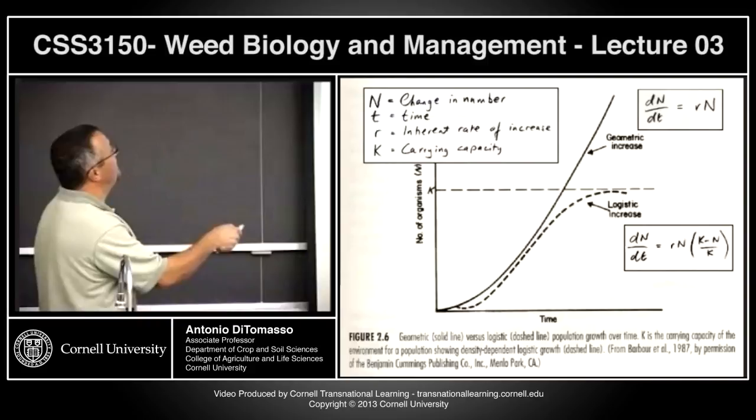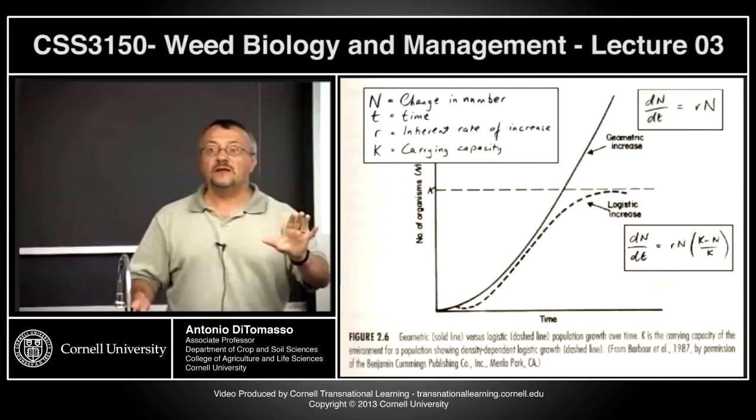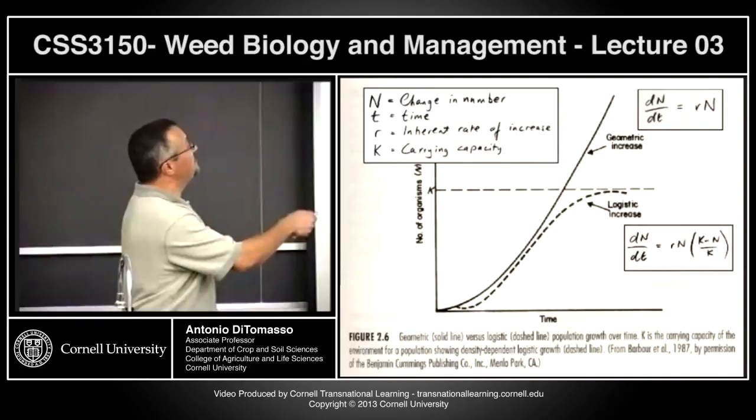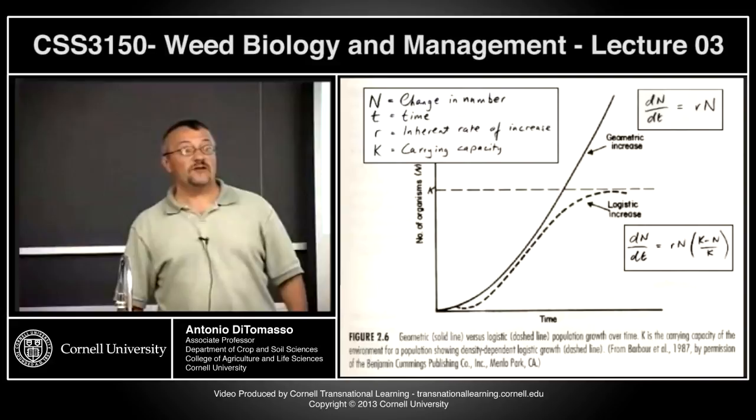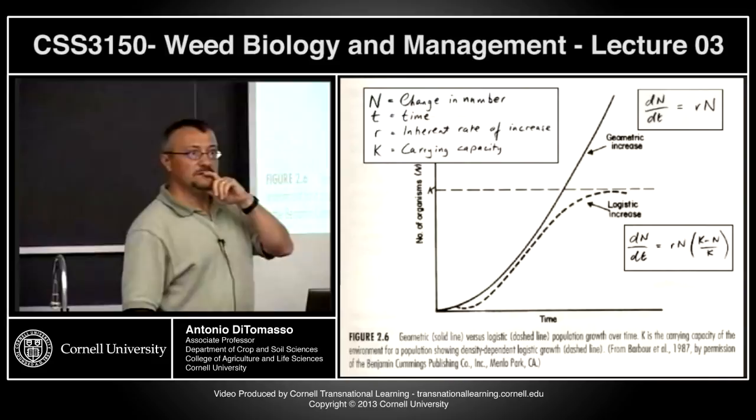Does a population increase indefinitely — is it unlimited in growth? Do we see this go on forever on the planet? What happens? The population reaches some form of carrying capacity.